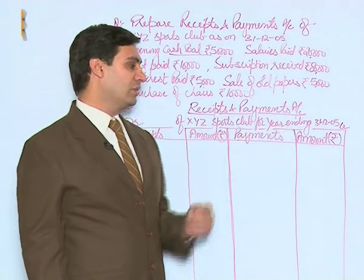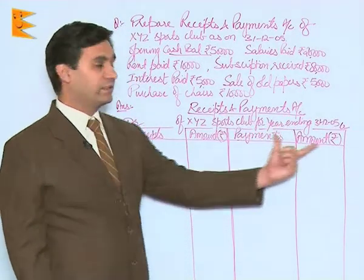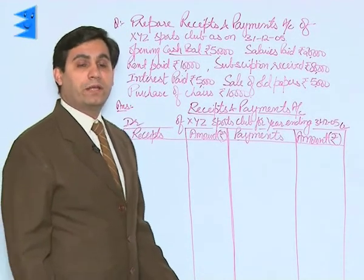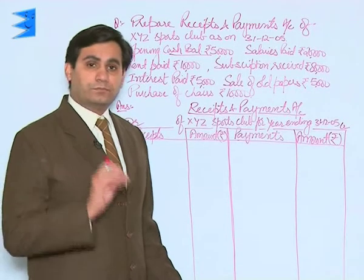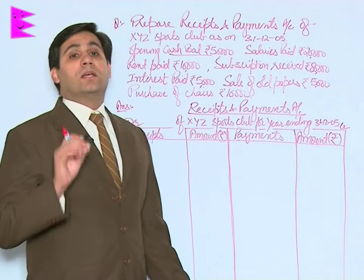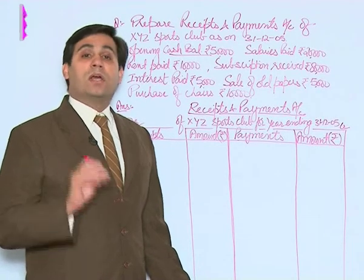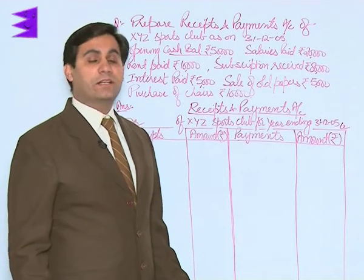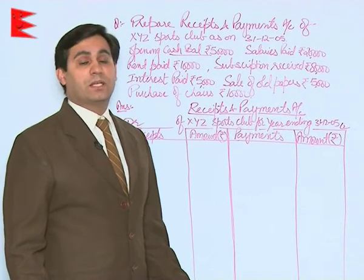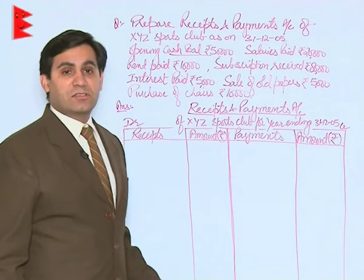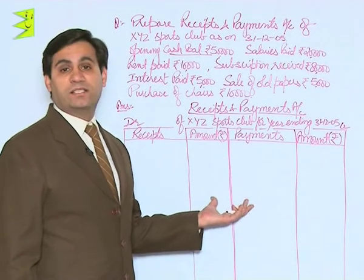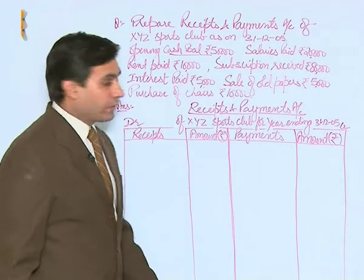Receipts and payments account of XYZ Sports Club for the year ending 31st December 2005. The debit side is the receipts side and the credit side is the payments side. Remember, receipts and payments account is always prepared on a cash basis — it is immaterial whether the expenses or receipts made in cash are for this year, the previous year, or the next year. There is also no distinction between capital and revenue items.